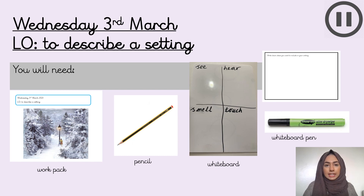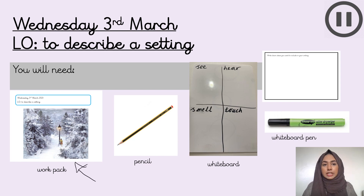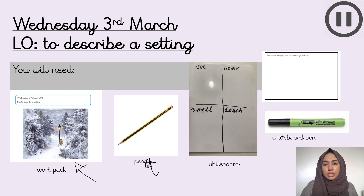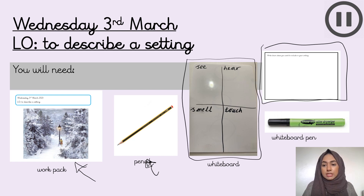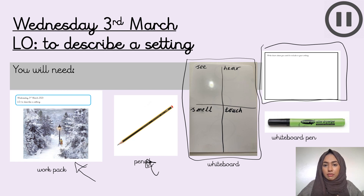Hi YouTube! Welcome to your writing lesson. For today's lesson you will need your work back with today's date on it, which is Wednesday the 3rd of March. You need a pencil, and then you have the option — in your booklet you either have this sheet where you can write down your ideas, or like we've done previously, you can get your whiteboard, write down the four sentences we'll be focusing on, and a whiteboard pen. The choice is yours, so press pause now and make sure you have those things.